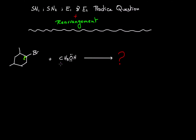For a second degree alkyl halide it could be any mechanism, so that step alone is not helpful. Next, look at the nucleophile or base: methanol is considered a weak nucleophile and also a weak base. A weak nucleophile with a second degree alkyl halide gives SN1, and a weak base with a second degree alkyl halide gives E1, so we get a mixture of SN1 and E1.